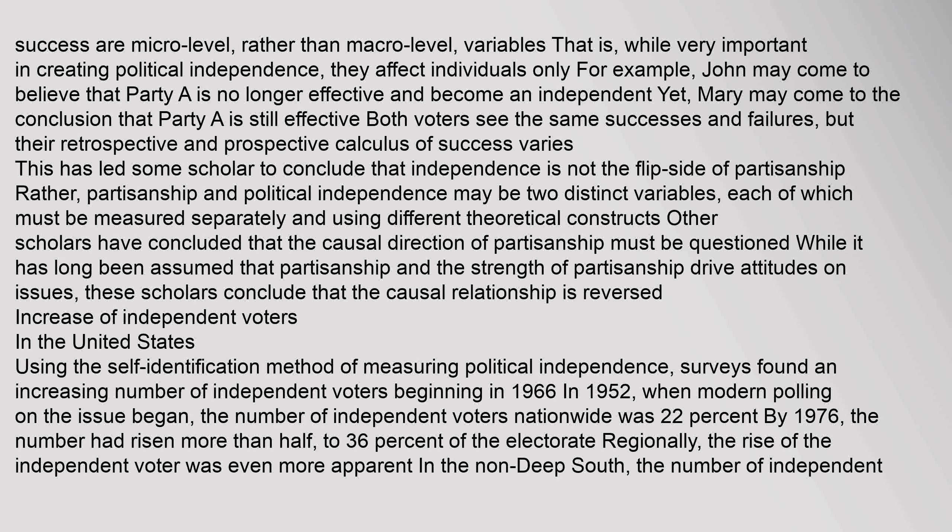For example, John may come to believe that party A is no longer effective and become an independent, yet Mary may conclude that party A is still effective. Both voters see the same successes and failures, but their retrospective and prospective calculus of success varies. This has led some scholars to conclude that independence is not the flip side of partisanship; rather, partisanship and political independence may be two distinct variables, each of which must be measured separately using different theoretical constructs.